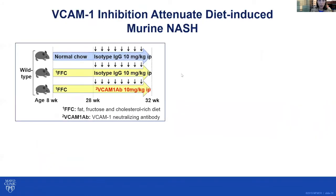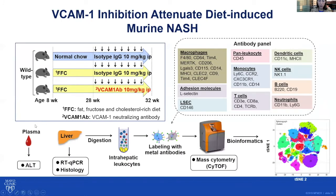To test whether VCAM1 inhibition attenuates diet-induced NASH, we employed our NASH mouse model and a VCAM1 neutralizing antibody. We assessed liver injury by measuring ALT levels, liver inflammation and fibrosis by real-time PCR and histology, and we performed immunophenotyping of mice from the different experimental groups using mass cytometry, or cytometry by time of flight. We replicated this study using a VCAM1 pharmacological inhibitor, AGI-1067 succinobucol.